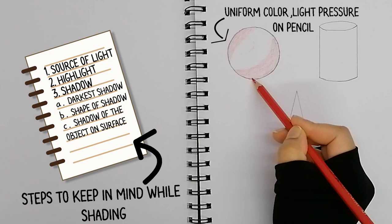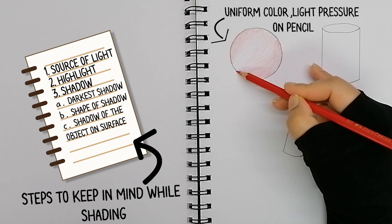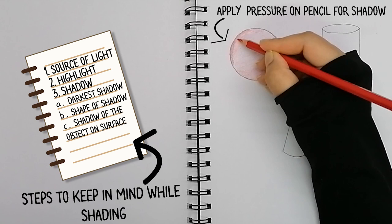Starting first with uniform color, not much pressure on the pencil. Understand the area of highlight. Color in the direction of the curve. Refer to your photo while working, and I'm done with the basic layer.